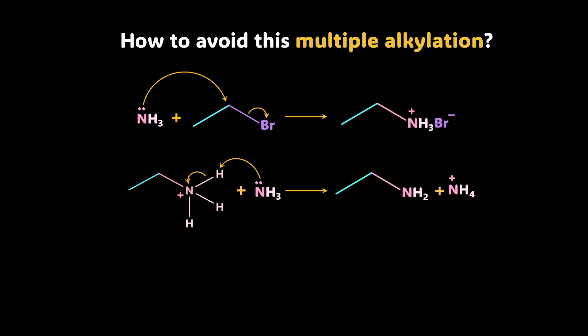So how to avoid this multiple product formation? Well, we have a way out. You can make use of excess ammonia and you're sorted. If you're using excess ammonia, you will not get multiple products. So multiple ammonolysis shall not happen. Alright?